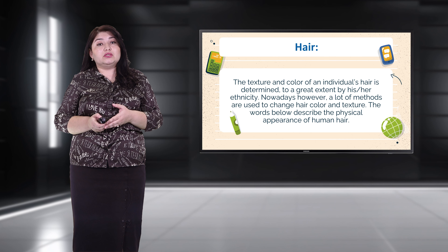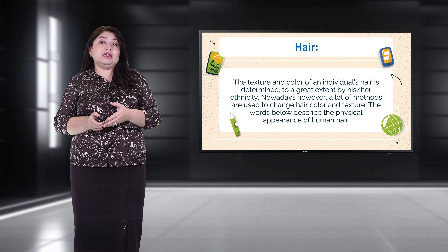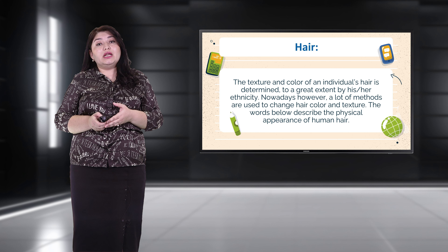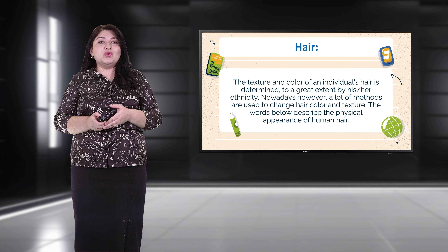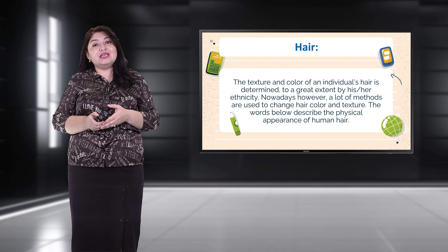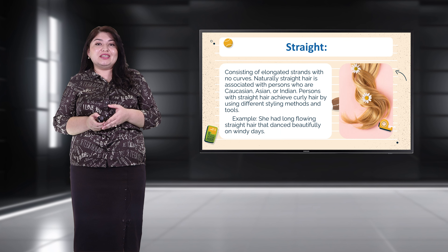Hair: the texture and color of an individual's hair is determined to a great extent by his or her ethnicity. Nowadays, however, many methods are used to change hair color and texture. 'Straight' — consisting of elongated strands with no curves. Naturally straight hair is associated with persons who are Caucasian, Asian, or Indian. People with straight hair can achieve curly hair by using different styling methods or tools.